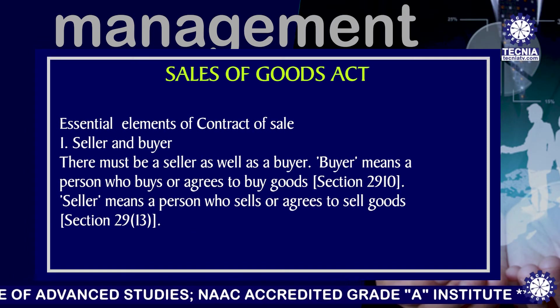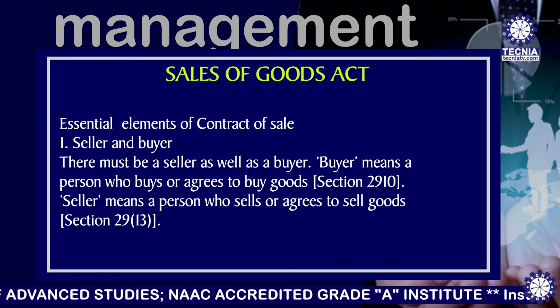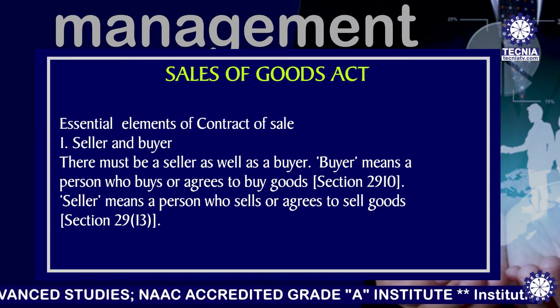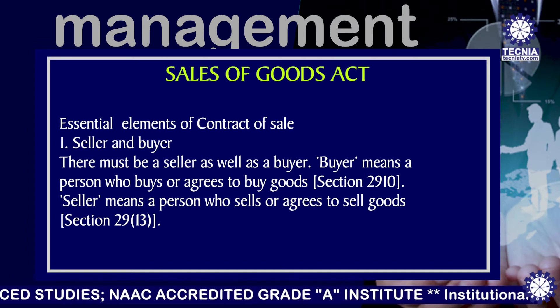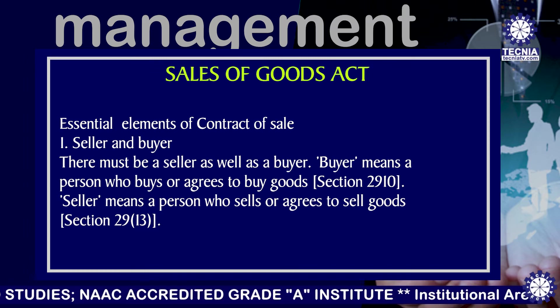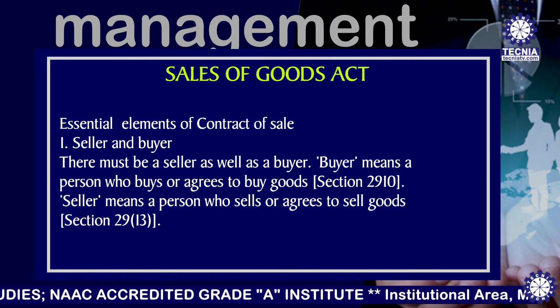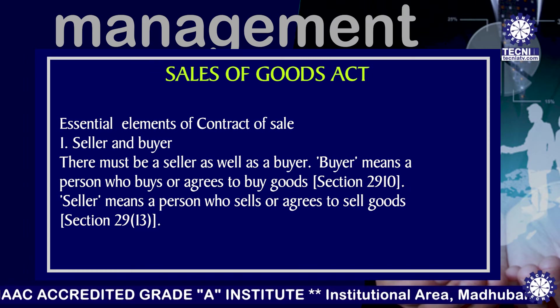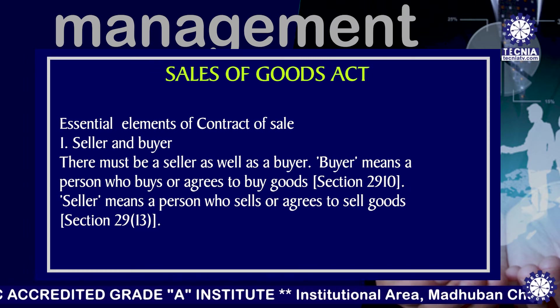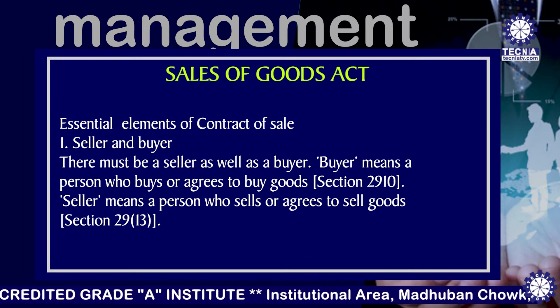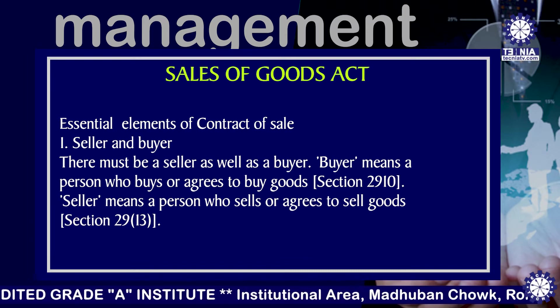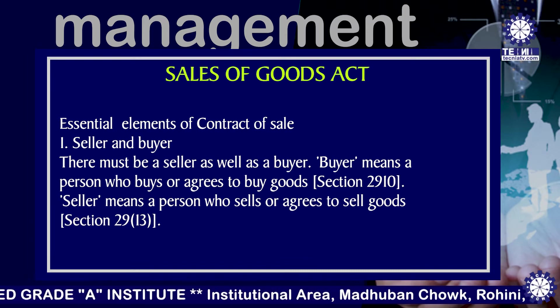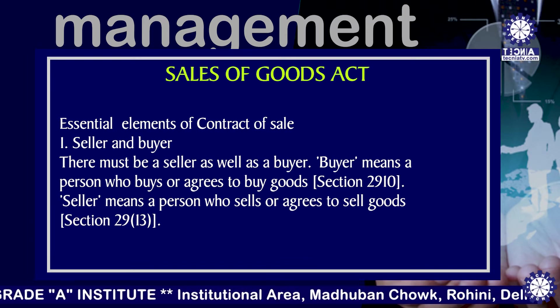The next important topic is: what are the essential elements of a contract of sale? Number 1, the seller and a buyer. There should be a seller as well as a buyer. Buyer means a person who buys or agrees to buy the goods.